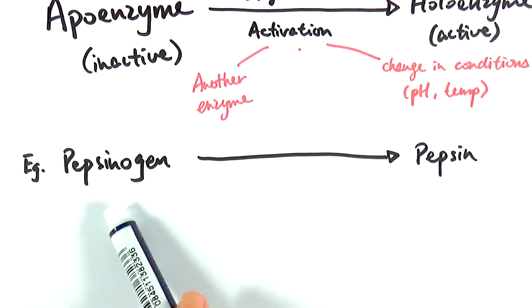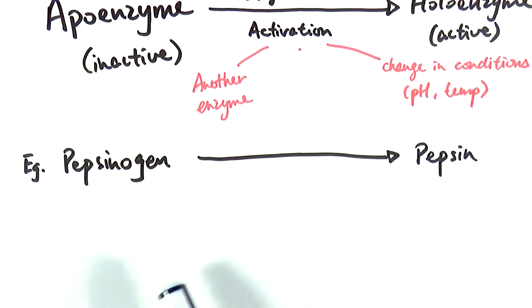Actually the cells would make it in the form of pepsinogen, which is inactive, and then release it, let's say by exocytosis, into the actual stomach. When it's actually in the stomach where there is hydrochloric acid that is also being produced, it is the low pH environment produced by the hydrochloric acid that will cause the pepsinogen to turn into pepsin.